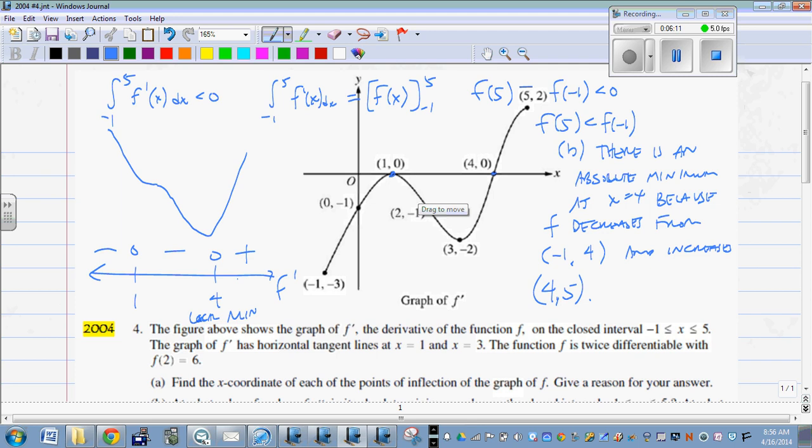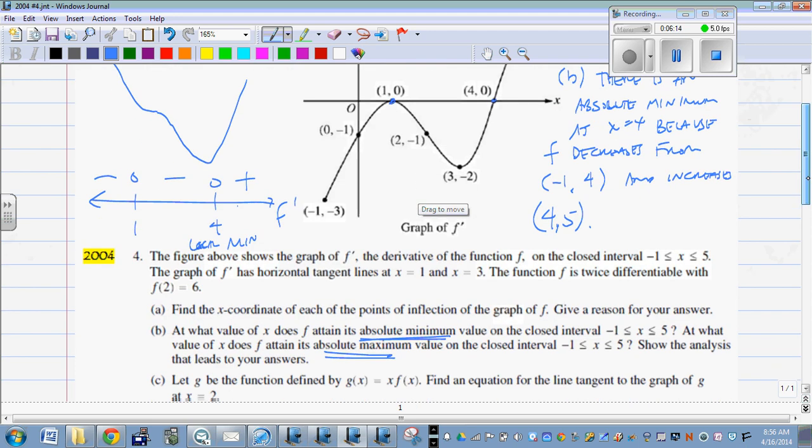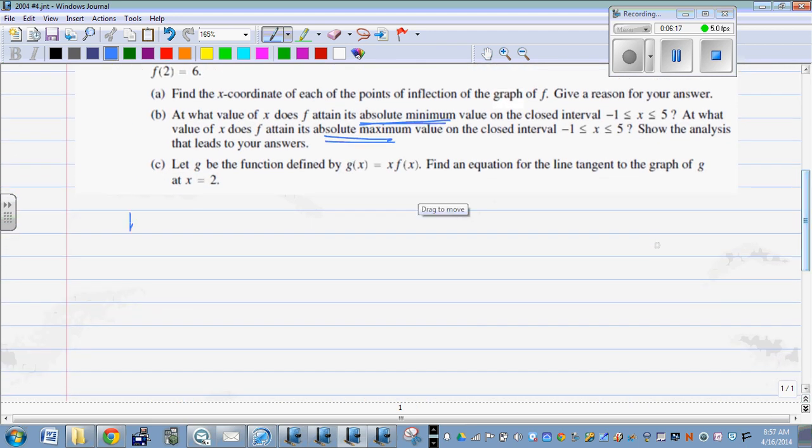So for the rest of part B, f has an absolute maximum at x equals negative one because the absolute max has to be one of the endpoints. All right, it has to be an endpoint.